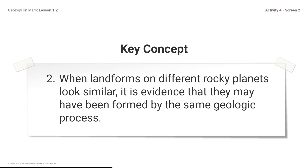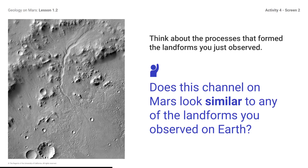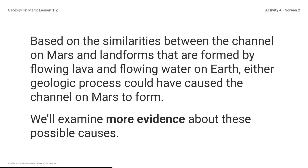You now have new information to help answer this question: Does the channel on Mars look similar to any of the landforms you observed on Earth? You might respond that the channel on Mars has similarities with both water and lava channels on Earth. Based on the similarities between the channel on Mars and landforms formed by flowing lava and flowing water on Earth, either geologic process could have caused the channel on Mars to form. We'll examine more evidence about these possible causes. We're going to use information gathered by NASA to learn more about the channel on Mars and determine which geologic process may have formed it.